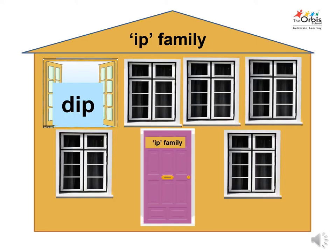Each member has their room with a window. Let's find the names of each family member living in the house. The phonic sound of d is d. To combine the sound of d with the sound of ip to get the name of the person inside the window — that is dip. Say hello to dip.